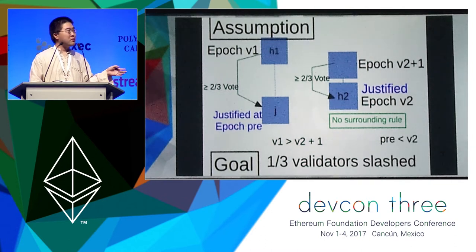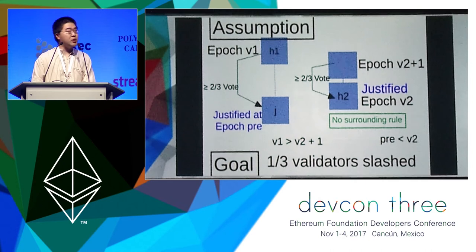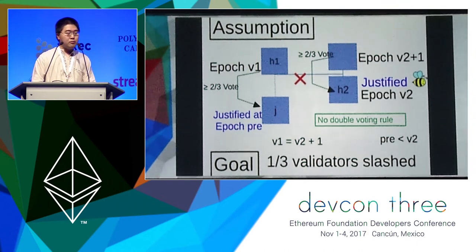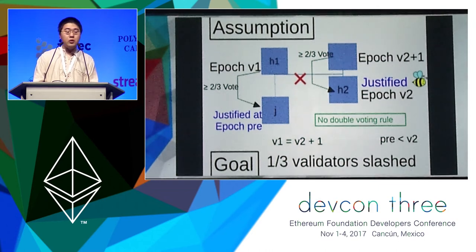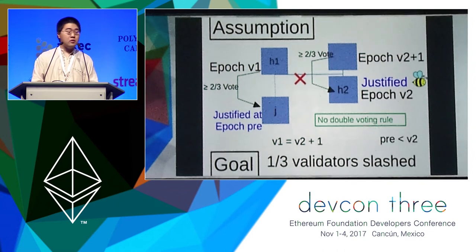Two-thirds did this and two-thirds did that, so at least one-third did both, and this one-third violated the no-surrounding rule. This way I'm proving a theorem and at the same time showing that these slashing rules are useful. Without the no-surrounding rule, in this case the main network could fork — and that would be a disaster — but because of the no-surrounding rule, we can hold one-third of the validators accountable. The last case is when v1 is exactly one more than v2: again, we have two different blocks at the same epoch being justified, so one-third of validators voted for two different blocks on the same epoch and can be held accountable. The Casper contract is able to identify who is to blame and get their deposits taken away.